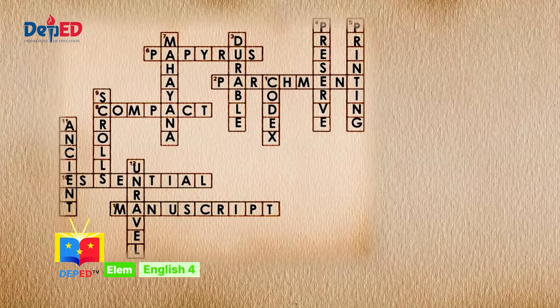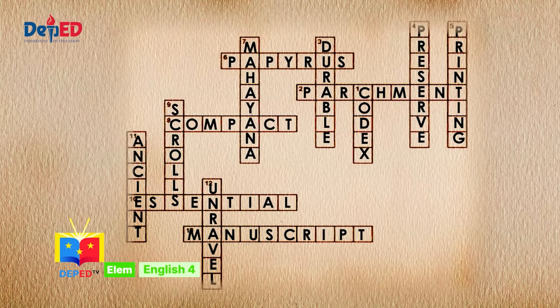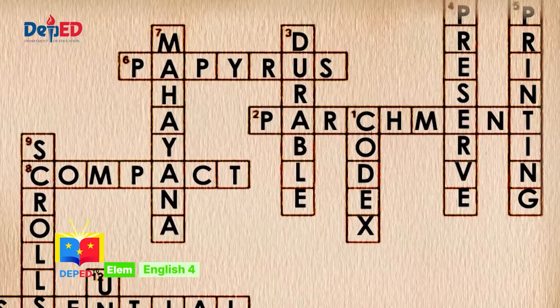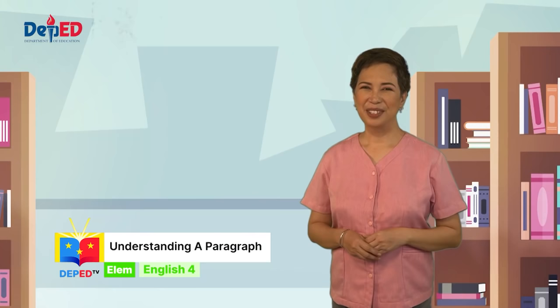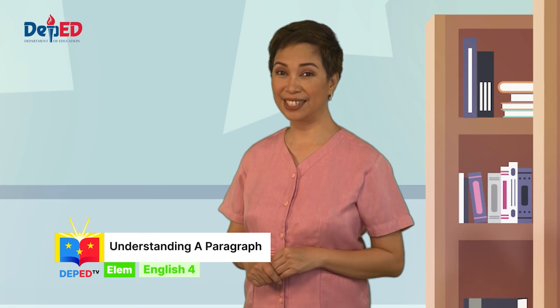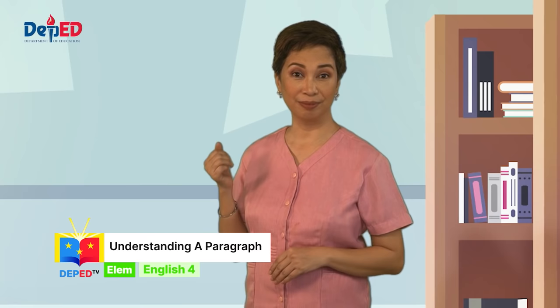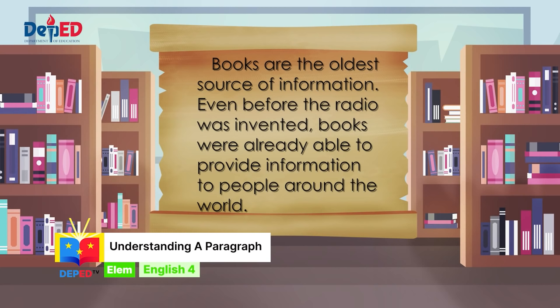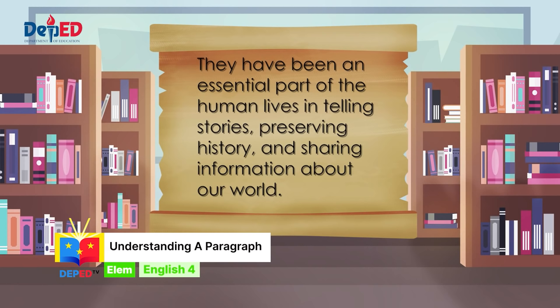Were you able to answer our crossword puzzle correctly? In case you encountered the words and forgot their meaning, you can always go back to this puzzle. Now remember that those words we learned in the crossword puzzle will help you understand the paragraph we will read. A paragraph is made up of sentences focusing on a single idea. Books are the oldest source of information. Even before the radio was invented, books were already able to provide information to people around the world. They have been an essential part of human life in telling stories, preserving history, and sharing information about our world.